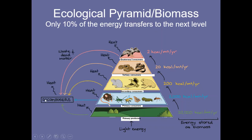We also have decomposers, because they aren't part of the actual pyramid. They take waste and dead matter and turn it back into nutrients for the plants again. A lot of heat is being lost here — that's the energy not getting transferred, the 90% that doesn't make it to the next level.